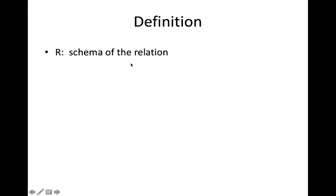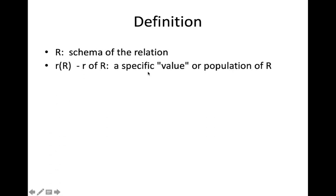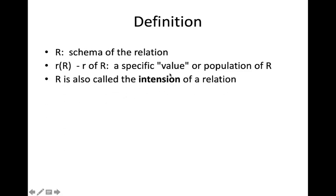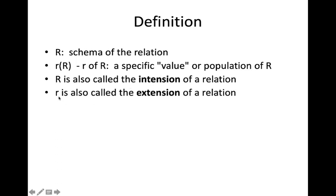Capital R denotes the schema of a relation. r(R) is a specific value or populated table — it denotes the state or population of R at a particular point in time. R is called the intension of a relation, and small r is also called the extension of a relation. So the schema represents intension and the database state at a particular moment is denoted by r(R).